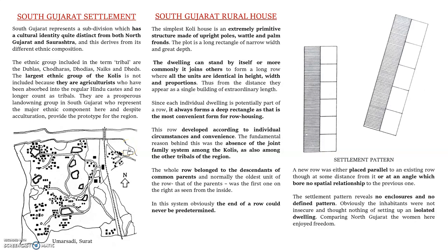Next we are going to see in detail about the South Gujarat settlement. South Gujarat was occupied more by the tribal community of people. Among these, the Kolis are a group of people whose occupation is agriculture, and they occupied the major area there.